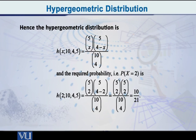So, here, K C x is equal to five C x. Then, N minus K is equal to ten minus five, which is equal to five.